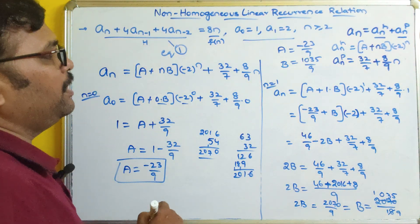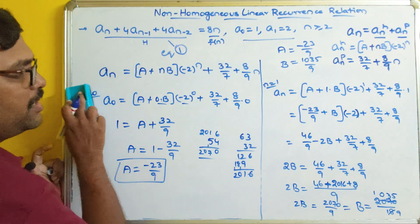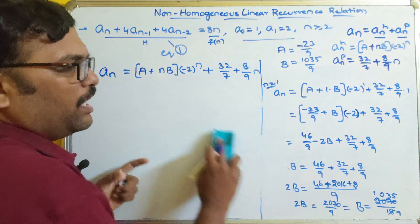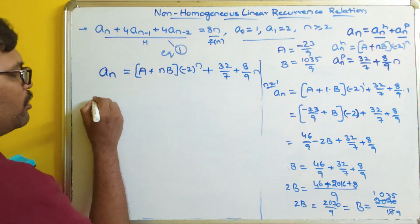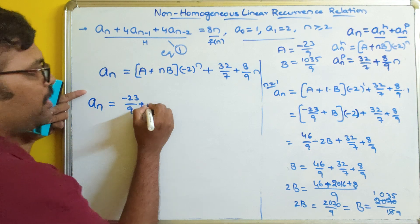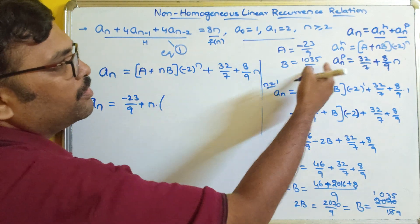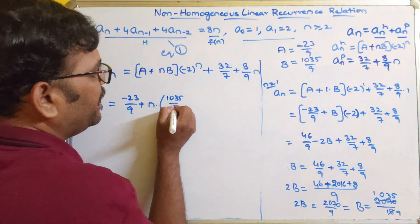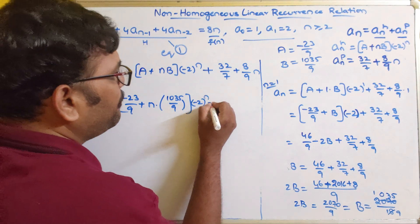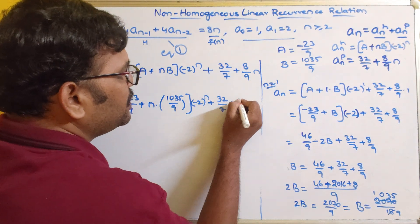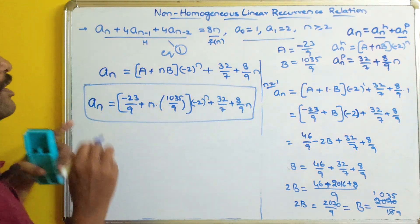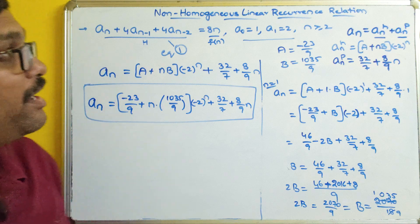We can apply the a and b values into the general equation. So a_n = (-23/9 + n·(1035/9))(-2)^n + 32/27 + (8/9)n. This will be the general solution for the given non-homogeneous linear recurrence relation.